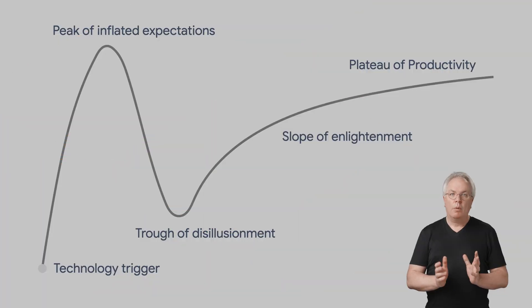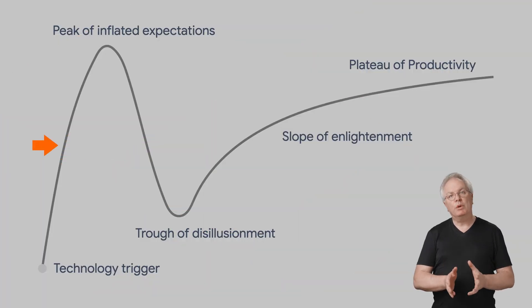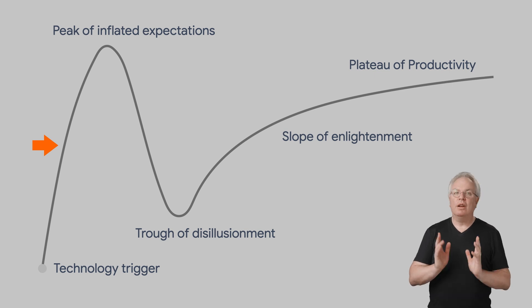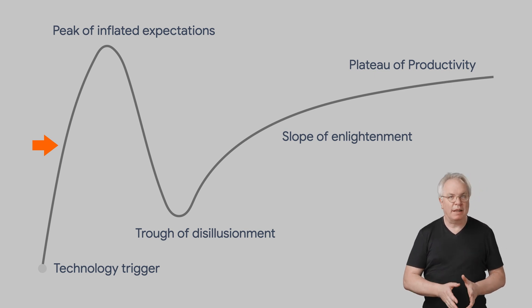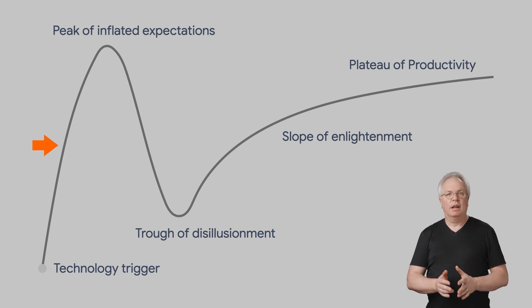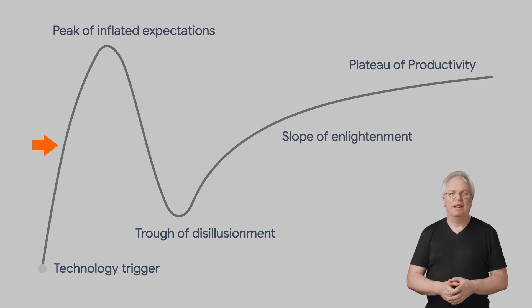But here's a little secret: they're not necessarily more intelligent or better than the rest of us. They just didn't give up when they hit the trough of disillusionment, and they continued along the curve. With AI, most of the world is here today, looking up at that peak of inflated expectations — and it's blocking the way towards productivity.